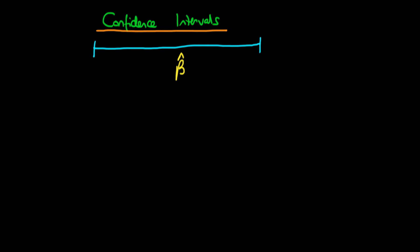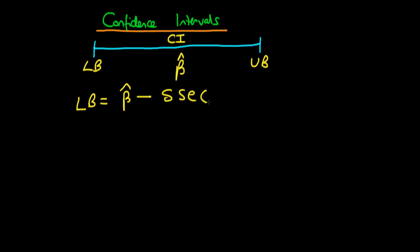We can work out the lower bound and the upper bound of this confidence interval quite easily. The lower bound is equal to beta hat minus some number delta — which I'm going to explain in a minute — times the standard error in beta hat. Let's assume that we are interested in working out a 95% confidence interval.